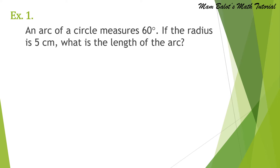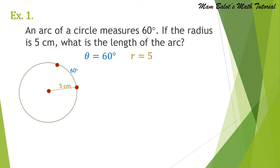Example number 1. An arc of a circle measures 60 degrees. If the radius is 5 centimeters, what is the length of the arc? So if we have this circle, which has an arc of 60 degrees and a radius of 5 centimeters, we have to compute the measure of the arc length colored in red.